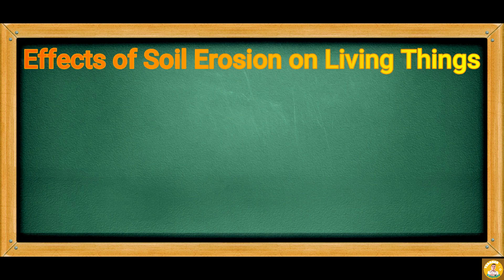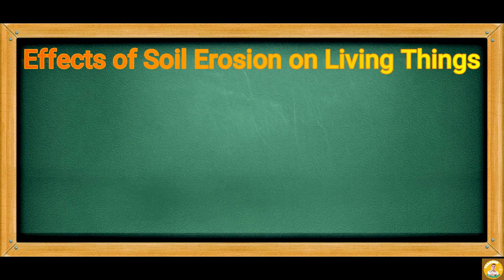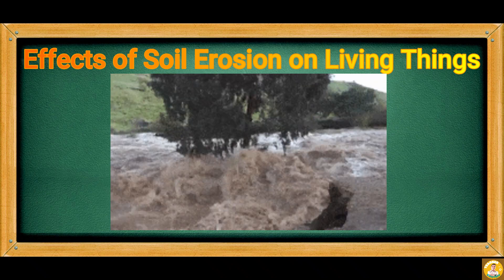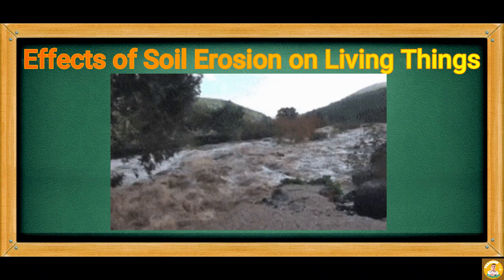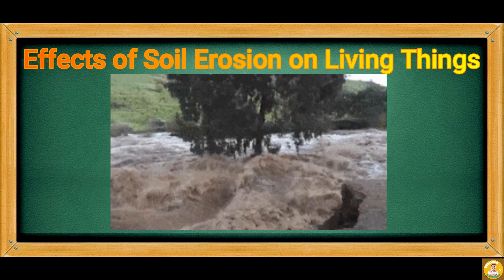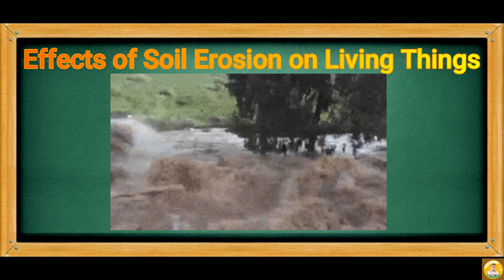Effects of soil erosion on living things: plants get most of their nutrients from the topsoil. The topsoil contains the organic materials produced by dead plants and animals. However, this topsoil is usually carried away by wind and water. Once the topsoil is gone, the nutrients available to plants will be carried away as well.